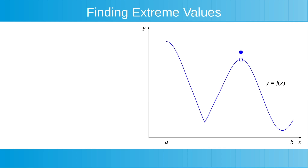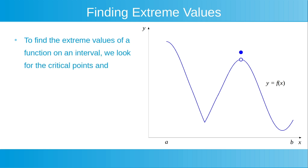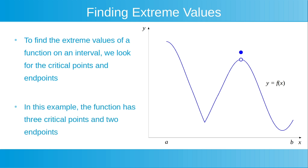Shown to the right is a plot of another function y is equal to f of x, plotted on the closed interval from x is equal to a to x is equal to b. To find the extreme values of a function on an interval, we look for the critical points and end points. In this example, the function has three critical points and two end points. The first critical point is now shown highlighted in red. At this point, the derivative of the function is undefined. The function's curve has a corner at this point.